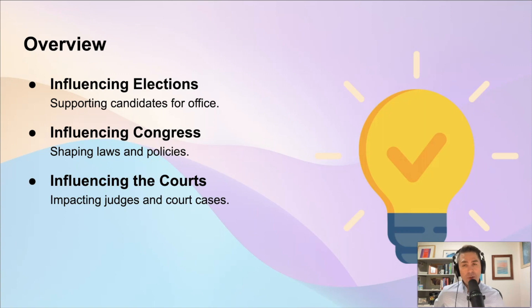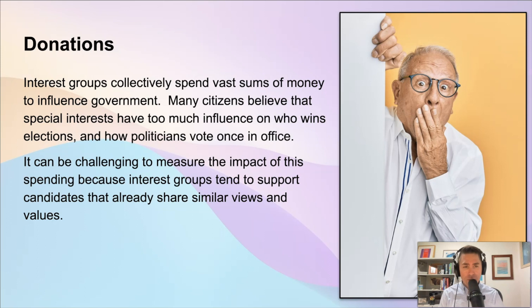It would be impossible to talk about interest groups without pointing out that they have enormous power when it comes to funding. American interest groups spend all kinds of money on donations to political candidates and political parties. In American democracy, special interests pay collectively vast sums of money to influence government.